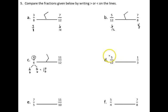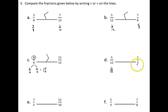For question D, if I think about my 12ths, 6 twelfths is the halfway point. 5 twelfths is just 1 twelfth under my halfway point. If I compare that to 1 third, 1 third is quite a distance away from 1 half. So that tells me that 1 third is less than 5 twelfths. In fact, if we compared our thirds on the number line to our 12ths, you would see that 1 third is the same as 4 twelfths, so it is definitely smaller than 5 twelfths.